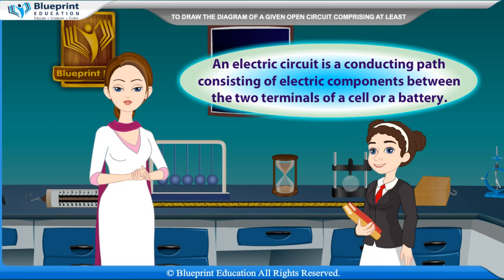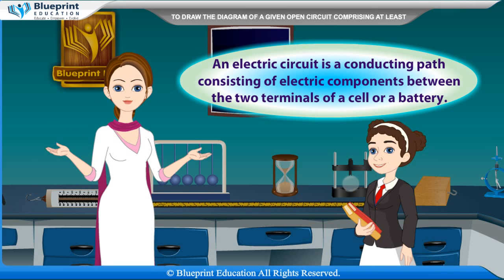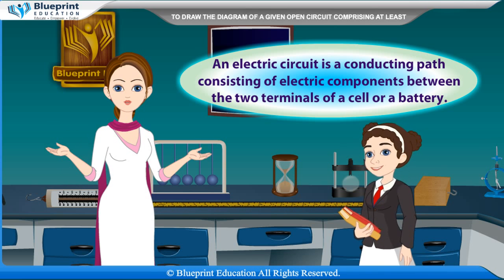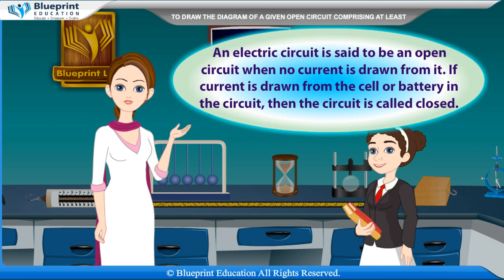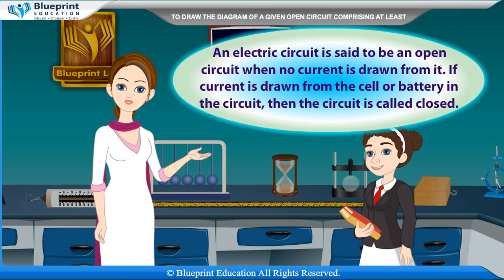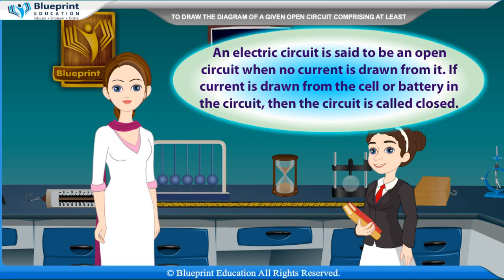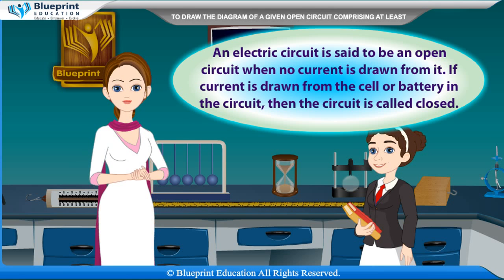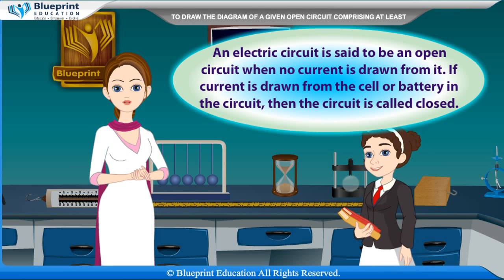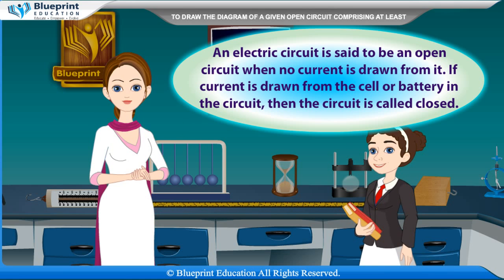An electric circuit is a conducting path consisting of electric components between the two terminals of a cell or a battery. An electric circuit is said to be an open circuit when no current is drawn from it. If current is drawn from the cell or battery in the circuit, then the circuit is called closed.